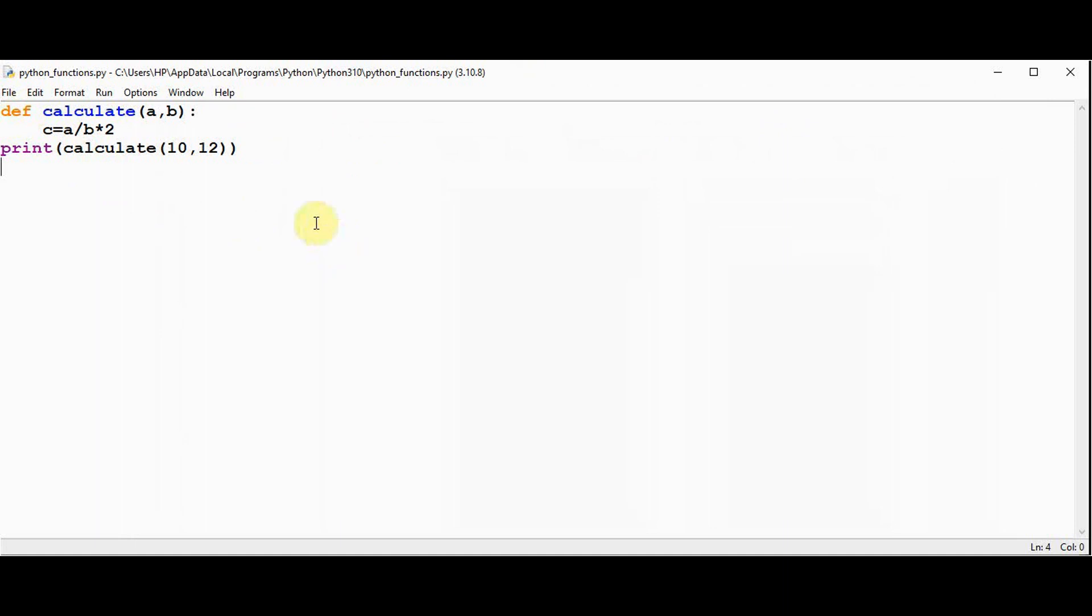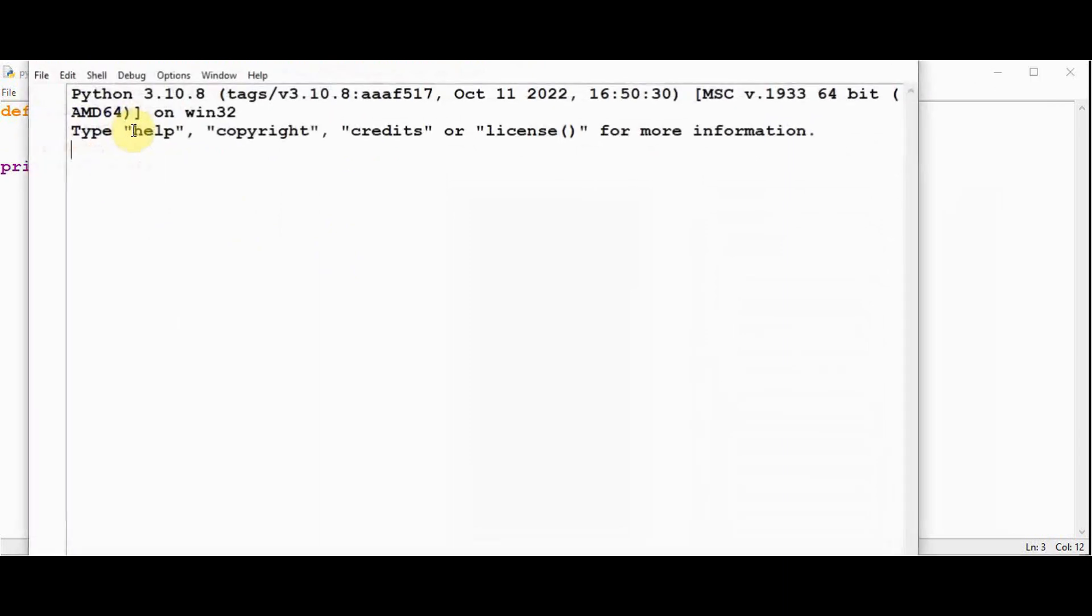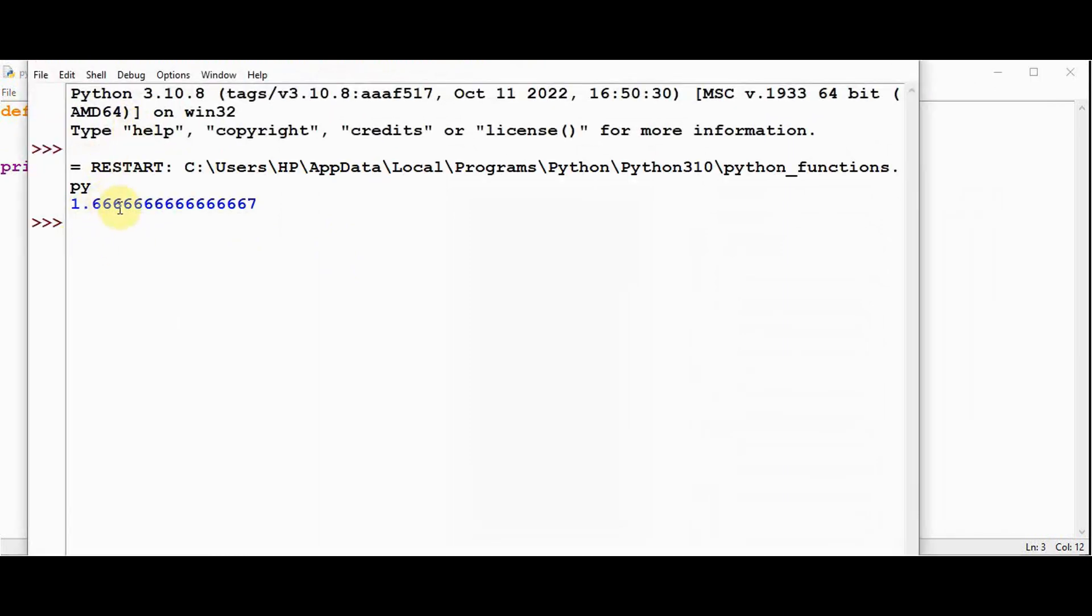To overcome this, you can return this variable, return c. So when we execute it, now the value in c variable is returned.